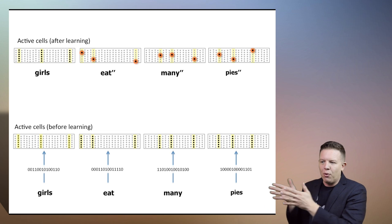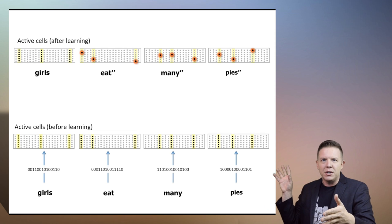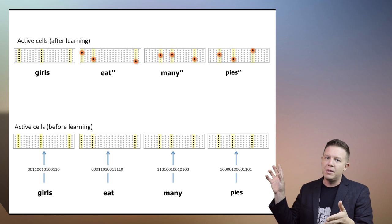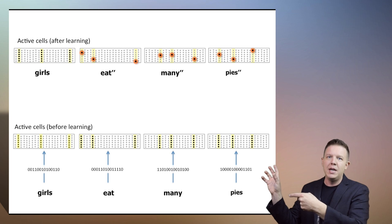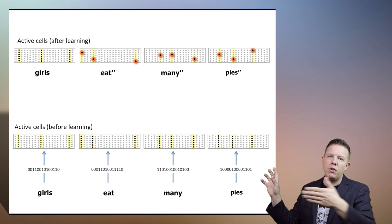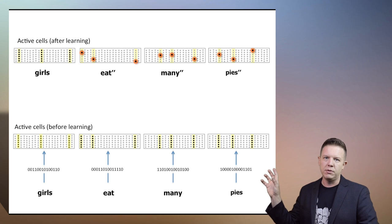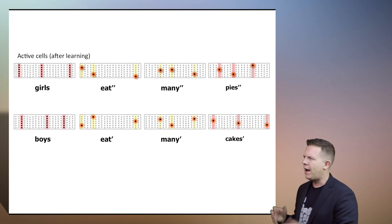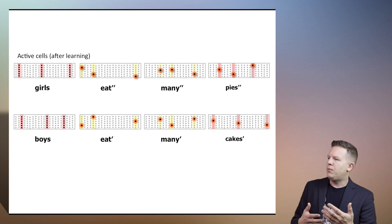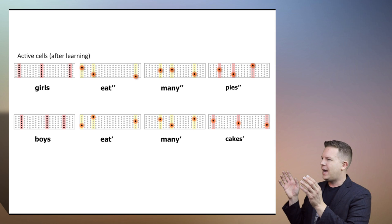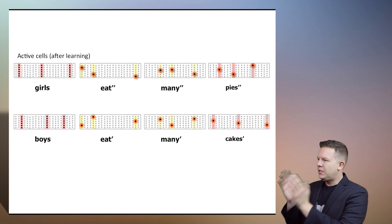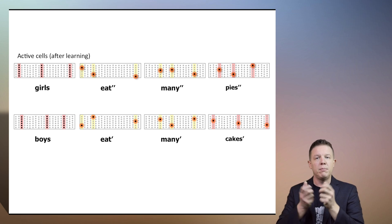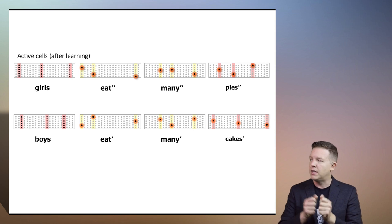So that temporal information — that the sequence started with a different term than boys — is followed all the way through the sequence. So after learning, we can see that there are these two completely different representations of the ambiguous terms in the sentences.